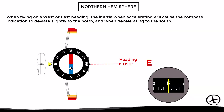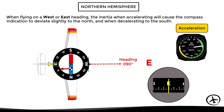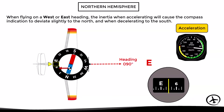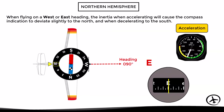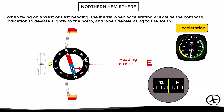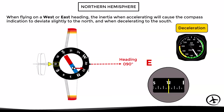If the aircraft accelerates, inertia will pull the magnet's center of gravity backward, causing the compass to give a false turn indication to the north, although the aircraft is actually still flying on the same heading. This effect will occur as long as the aircraft continues to accelerate. Once the acceleration finishes and the aircraft flies with a constant speed again, the inertia will disappear and the compass will gradually return to the correct heading indication. The opposite happens if the aircraft decelerates — inertia will pull the magnet's center of gravity forward, causing a false turn indication to the south.